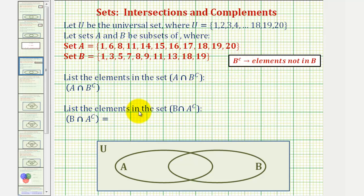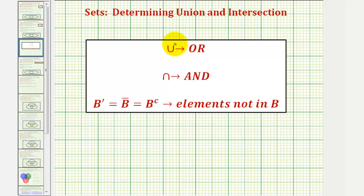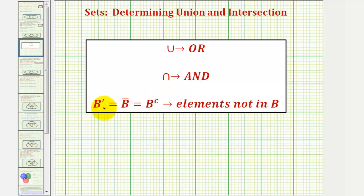We also want to list the elements in the set B intersect A complement. For a quick review, this symbol is the symbol for union, which means 'or,' and this symbol here is the symbol for intersection, which means 'and.' There are three different notations for the complement given here. The complement of B means the elements not in B.